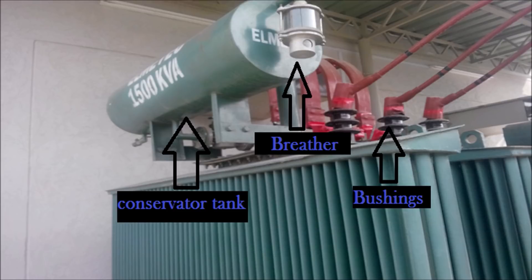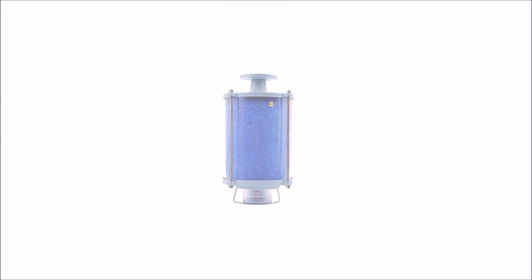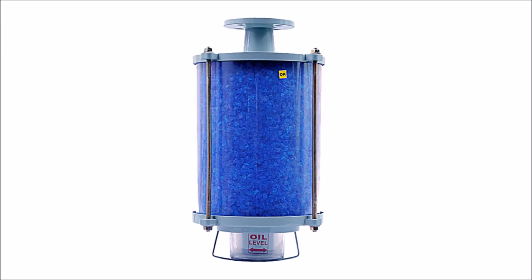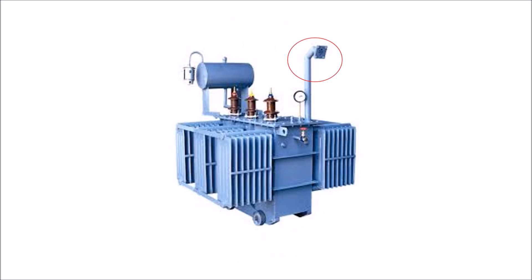The breather filters the air that enters or exits the conservator tank when the oil level inside it changes. The explosion vent is used to expel boiling oil in the transformer during heavy internal faults in order to avoid the explosion of the transformer.